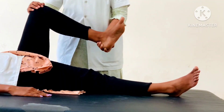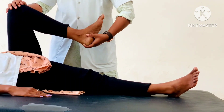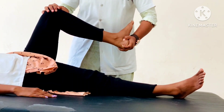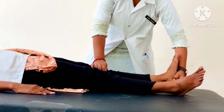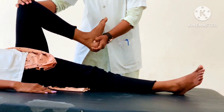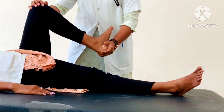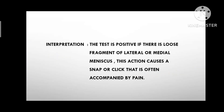The examiner then performs the same procedure with the knee laterally rotated to check medial meniscus injury. The process is repeated several times. Interpretation: the test is positive if there is a loose fragment of lateral or medial meniscus. This action causes a snap or click accompanied by pain.